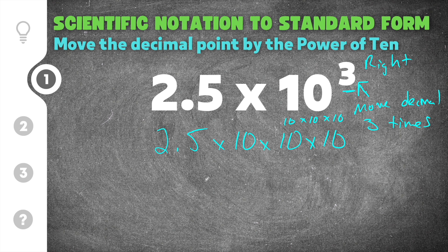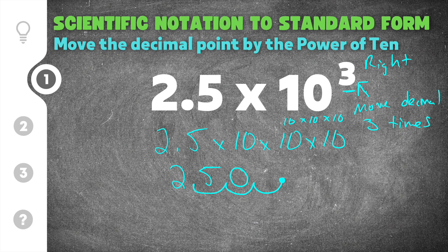It's much less likely you'll get confused if you write it out like this. Once you get good at it, you can just write the base 2.5 and use the exponent to move the decimal point to the right — three times. Everywhere you skipped a digit, add a zero. So we add two zeros and our final answer is 2,500.